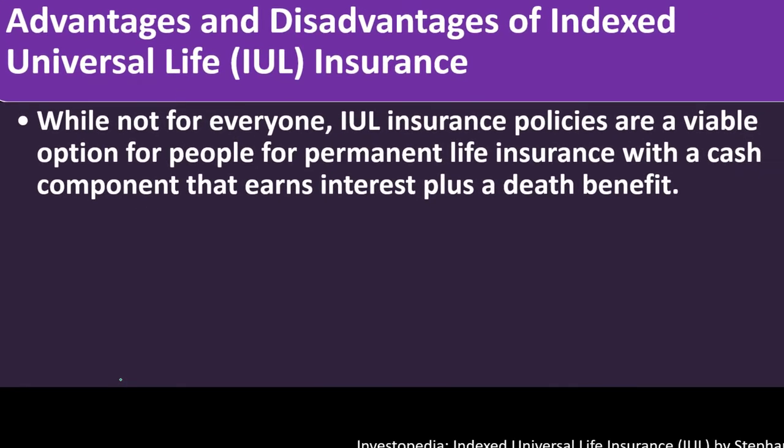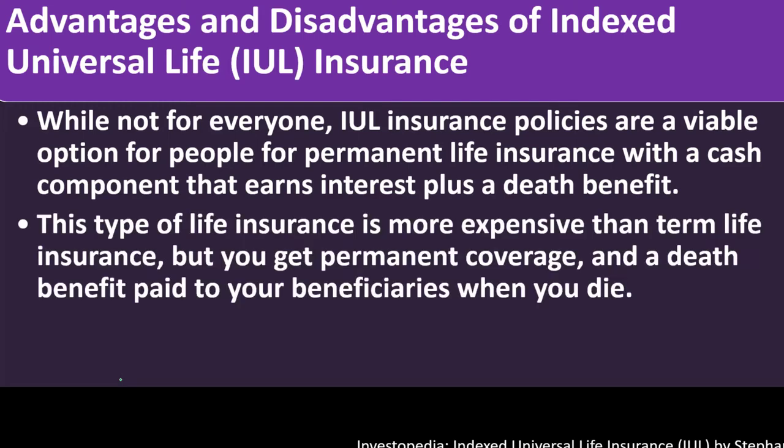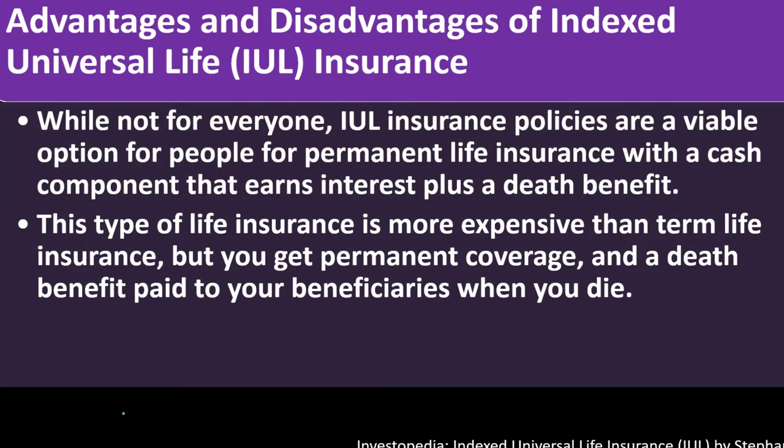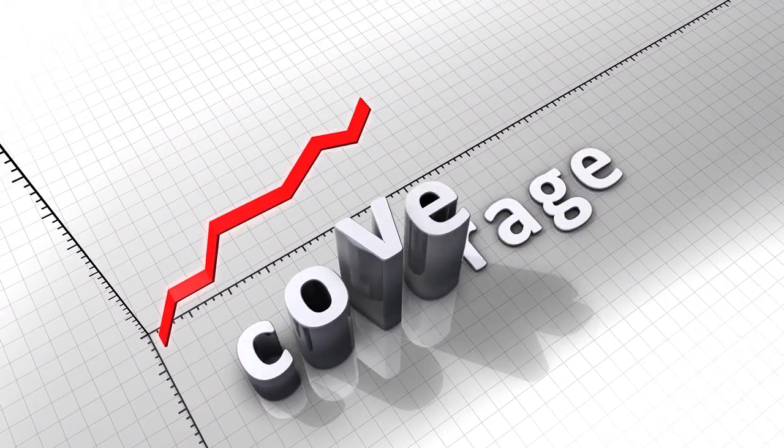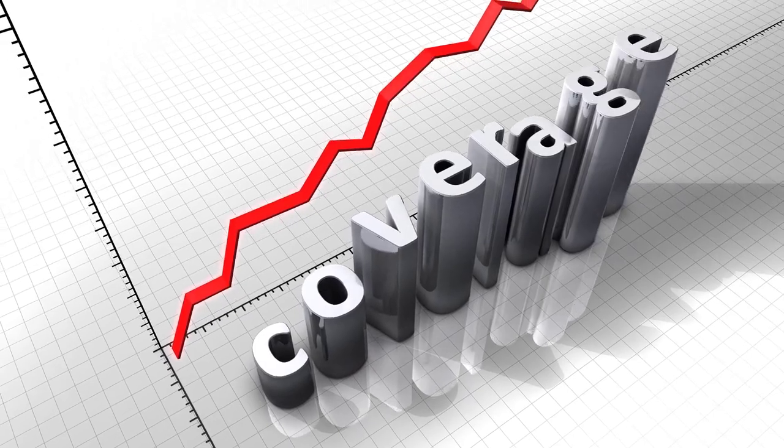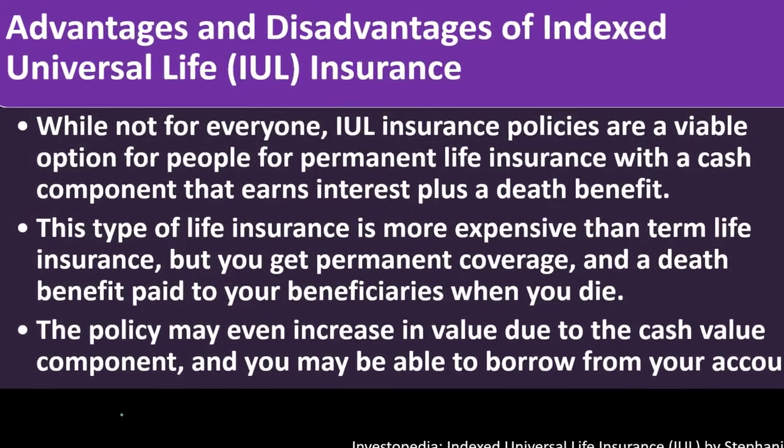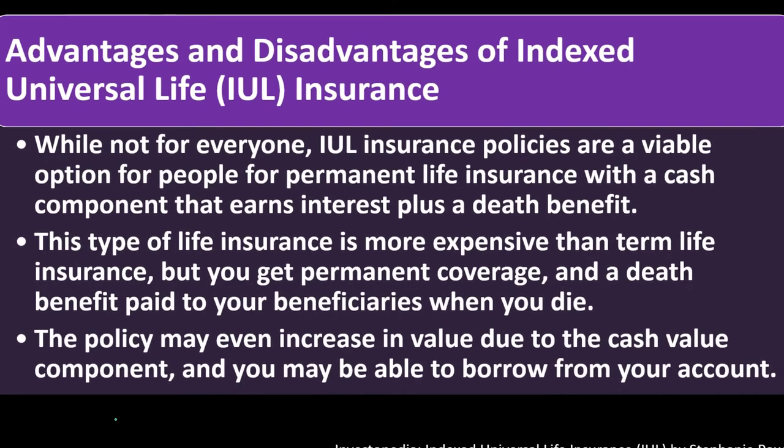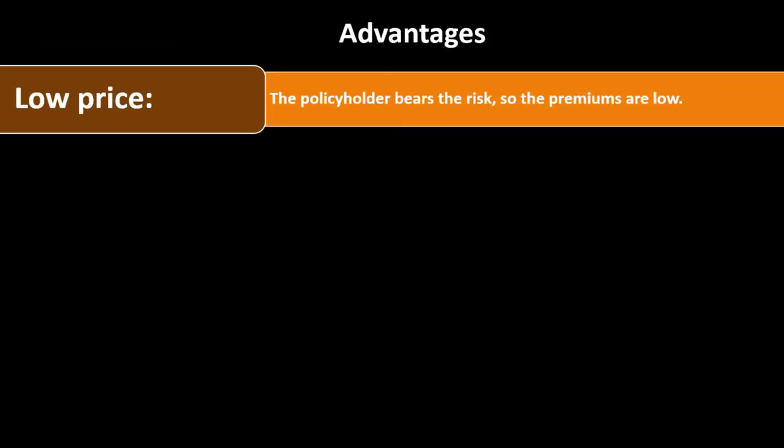What are the advantages and disadvantages of the indexed universal IUL insurance? Not for everyone, IUL insurance policies are a variable option for people for permanent life insurance with a cash component that earns interest plus a death benefit. This type of life insurance is more expensive than term life insurance. You always want to be going back to that adage comparing to the term and investing the difference. Why are you not doing that? What added advantage are you getting? What are the goals you're looking for? But you get permanent coverage as opposed to term coverage, although term coverage can often cover you for the term in your life that you need the coverage for. You get a death benefit paid to your beneficiaries when you die. The policy may even increase in value due to the cash value component and you may be able to borrow from your account.